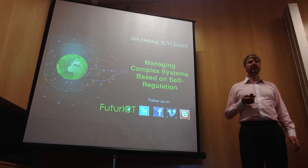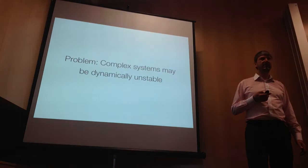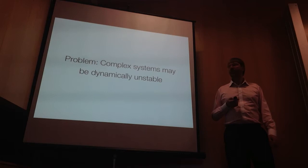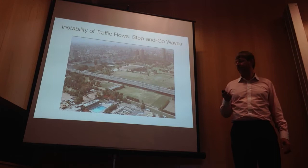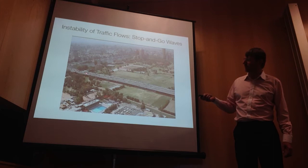I'm giving you a few examples of how to manage complex systems based on self-regulation. There's a problem: complex systems may be dynamically unstable, and that's why we often find, for example, stop-and-go traffic, as you can see it over here, emerging.